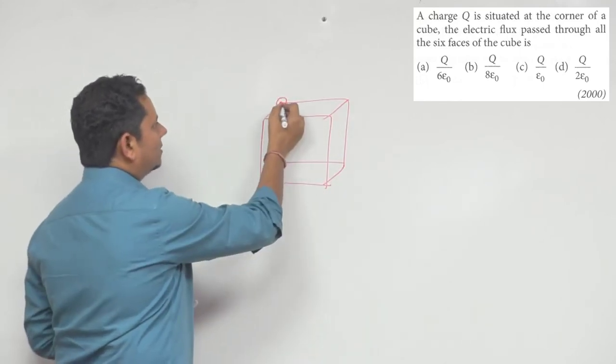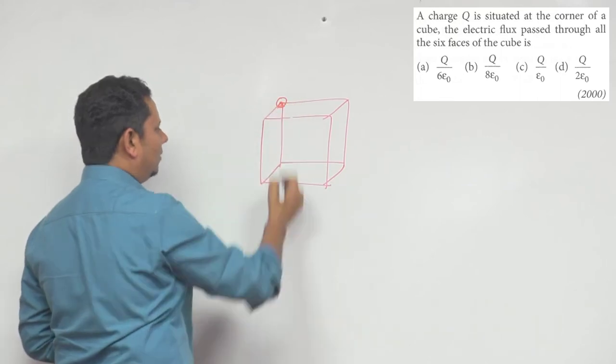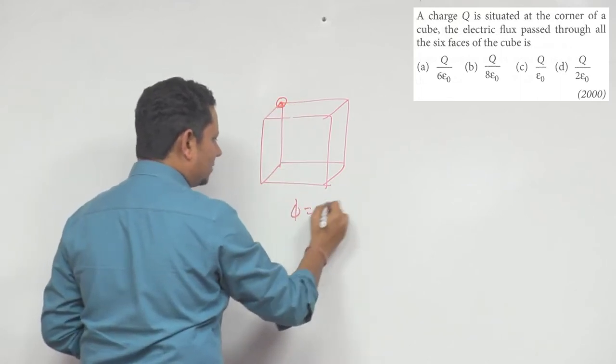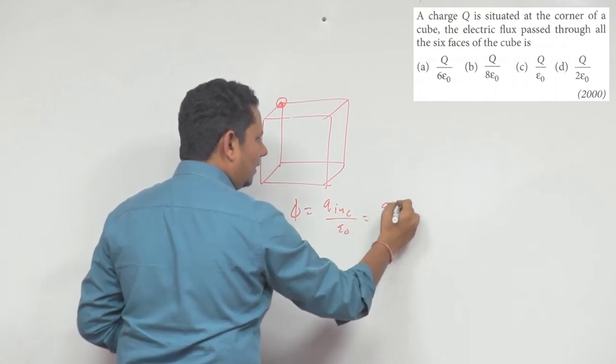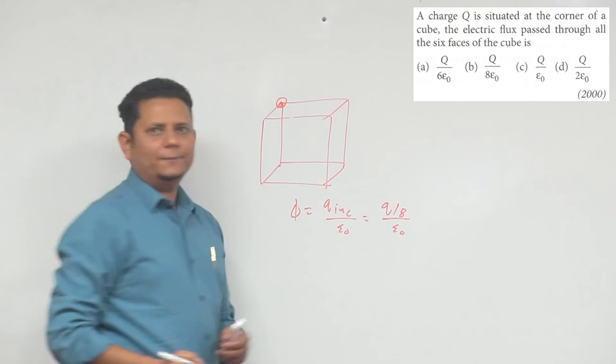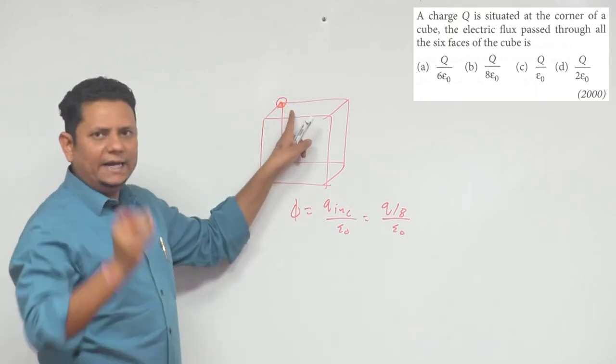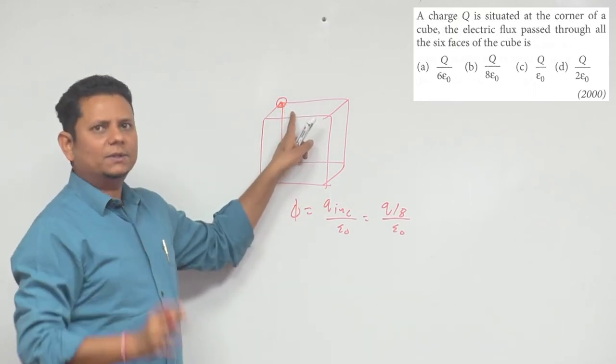Let's say you have charge Q at this corner. Now when you have charge Q at this corner, the net flux inside is Q enclosed divided by epsilon naught. Inside, your charge will be Q by 8, alright? So inside, only one-eighth position will be inside. This is your solid structure, you may have studied this.